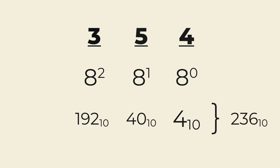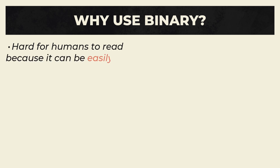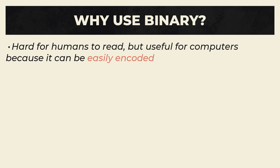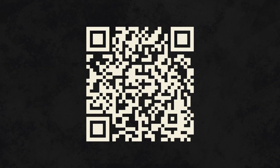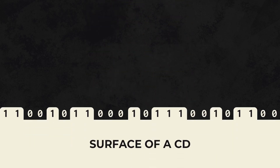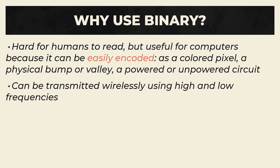With these examples out of the way, we can now discuss why we would use any particular number system. First, why would we use binary? As you probably experienced, binary isn't really readable by humans. However, it's really useful for computers and data storage, because it can encode all numbers into two states: on and off. When it comes to storing data, these two states can be anything. On a piece of paper, a black dot could be on and a white dot could be off, which is essentially how QR codes work. It could also correspond to a bump or a valley on a physical surface, which is how CDs work, or a powered or unpowered circuit. Binary has the advantage that it can be transmitted wirelessly using high and low frequencies, an advantage not found in other number systems.